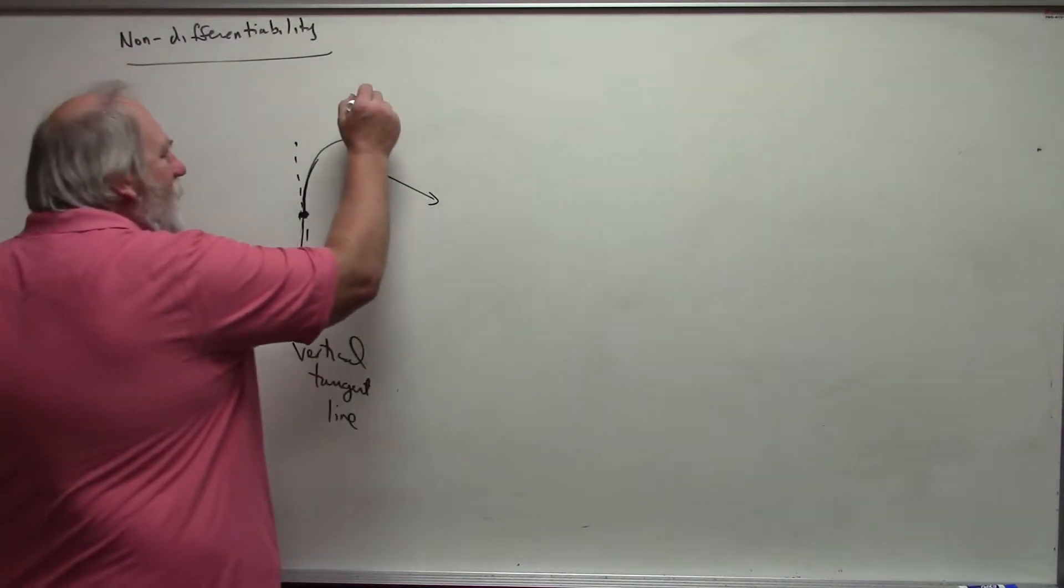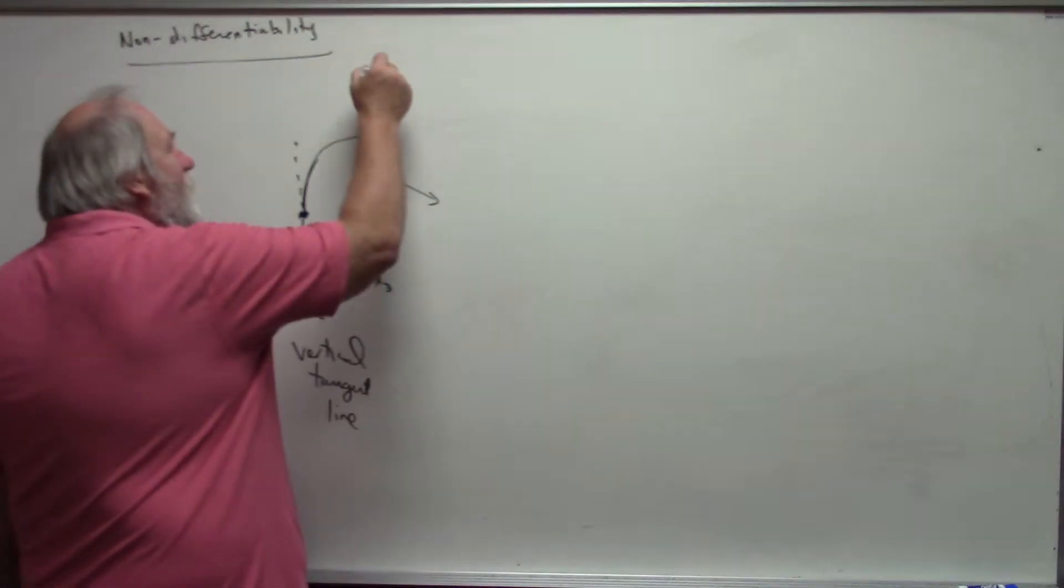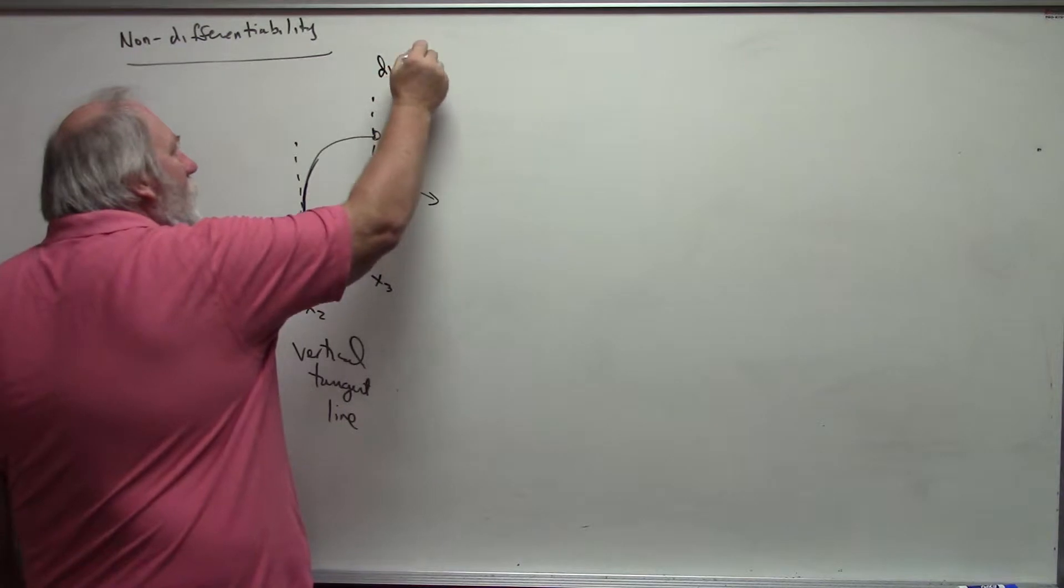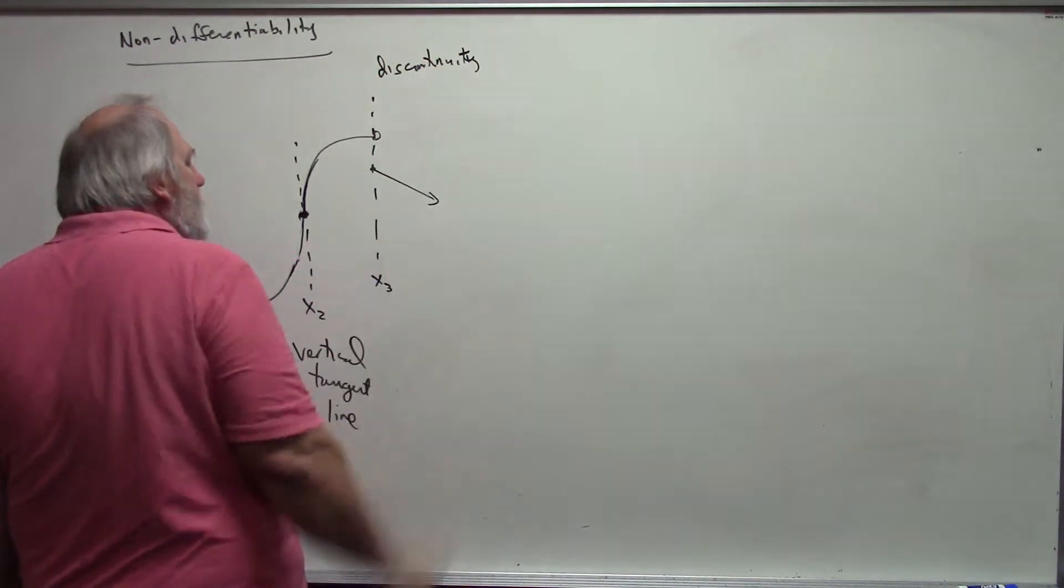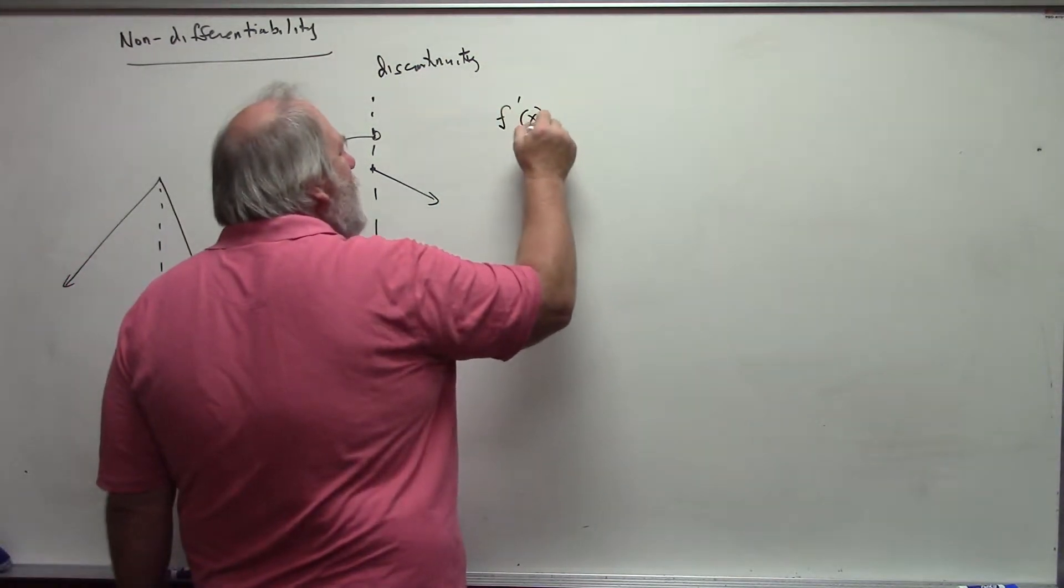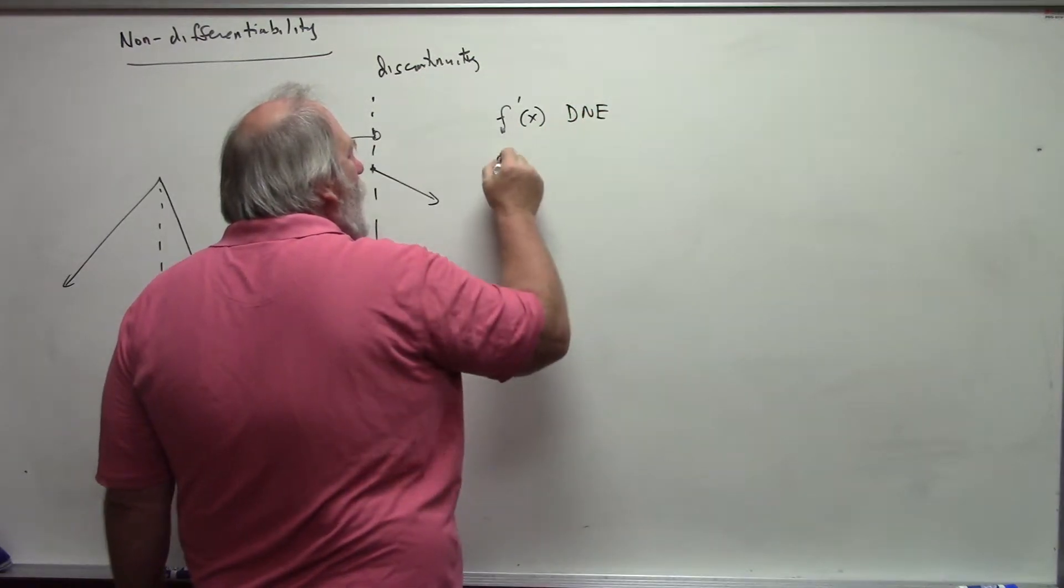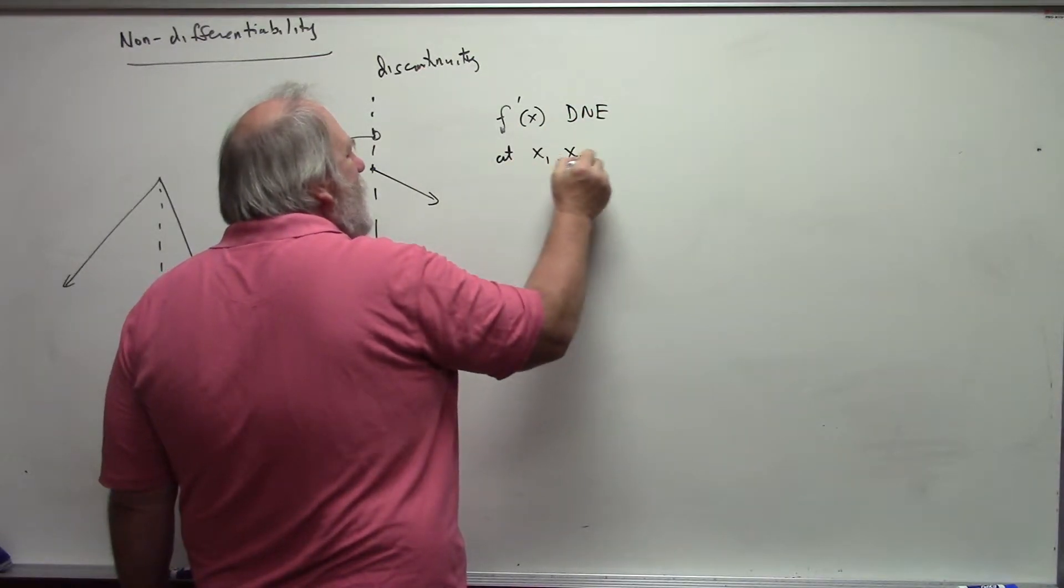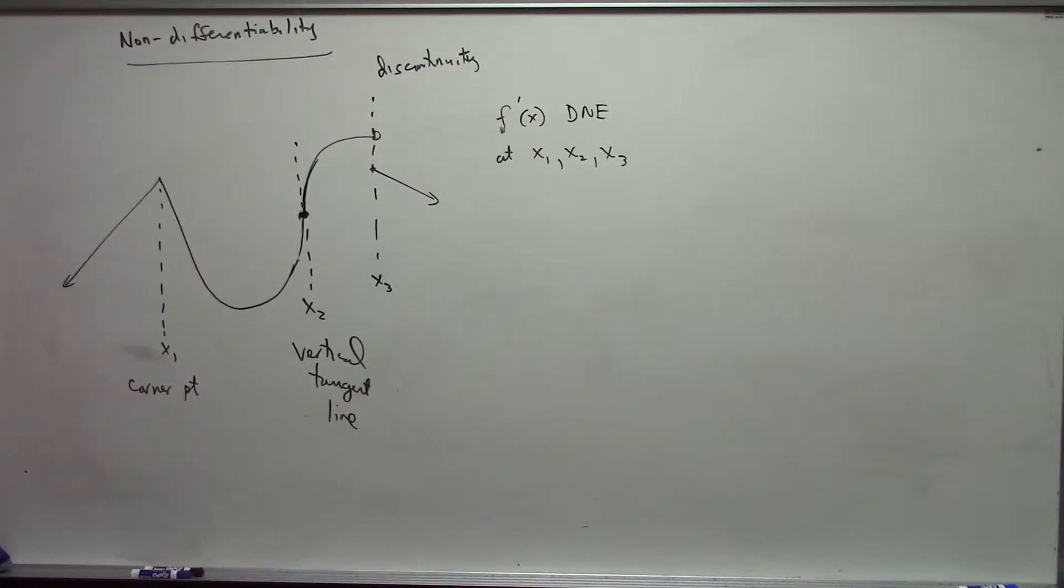And the third situation, I'll call this x3, is I have a discontinuity. And so f prime of x does not exist at x1, x2, or x3 for three different reasons, but does not exist at those values.